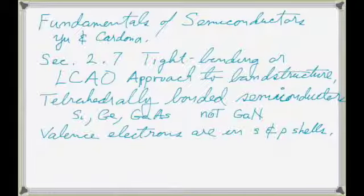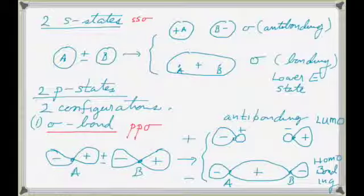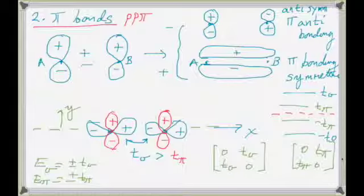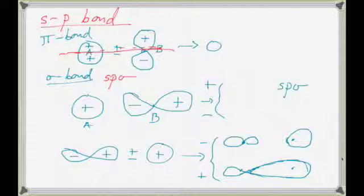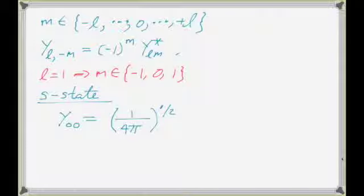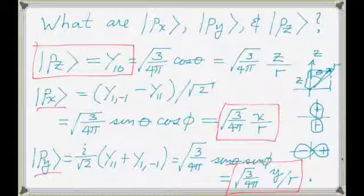We've been starting the journey to finally calculate the band structure of silicon — showing the orbitals and the bases we're going to be using, and the various types of bonds that they form. The S and P orbitals, the bonds that they form, defined in terms of spherical harmonics, and how the spherical harmonics relate to the final basis set of px, py, pz orbitals that we actually use.